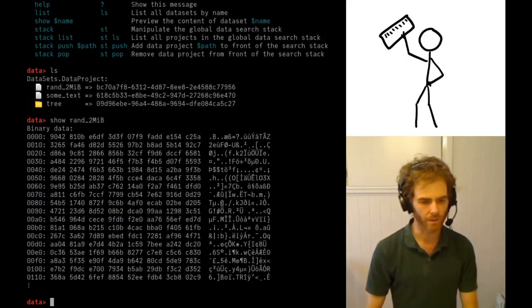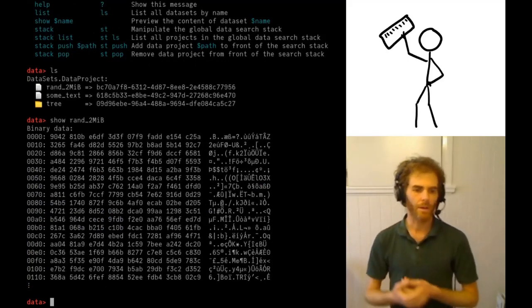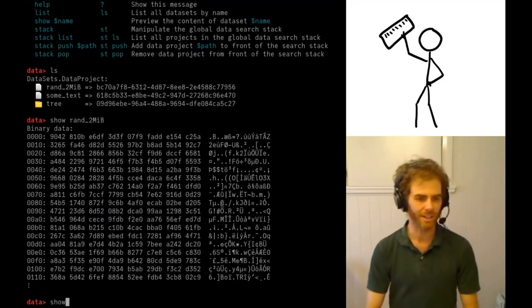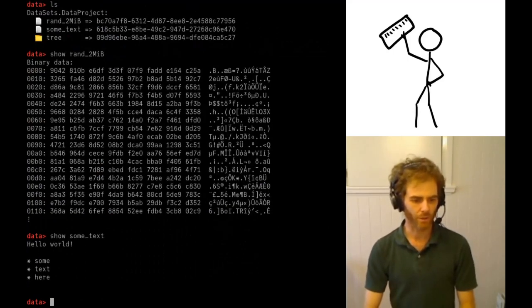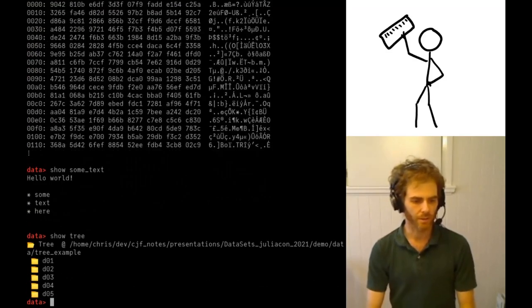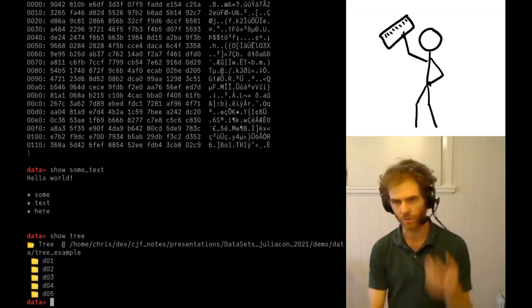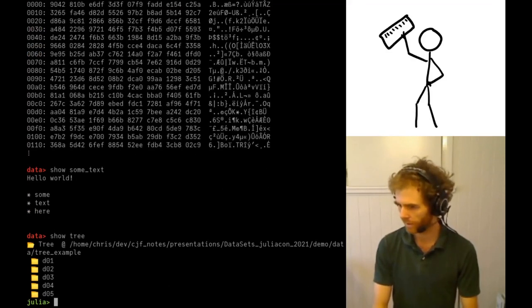So let's have a look at this one. This is just a random binary file. So we can't see much in there. We can have a look at the text file. And we've also got some tree-like data. So we can see that it's a sort of nested tree. Okay, so that's the data REPL very quickly.